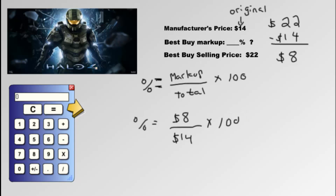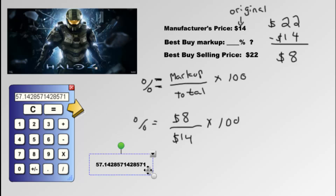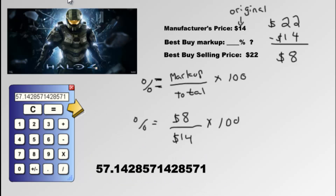Then you times by 100. The markup is $22 minus $14, which is $8. So we write: percent equals $8 divided by $14, times 100. We get a whole bunch of decimals — don't let those scare you. We round to the nearest whole number. The digit after is a 1, which is less than 5, so it doesn't change the 7. The answer is simply 57% markup.